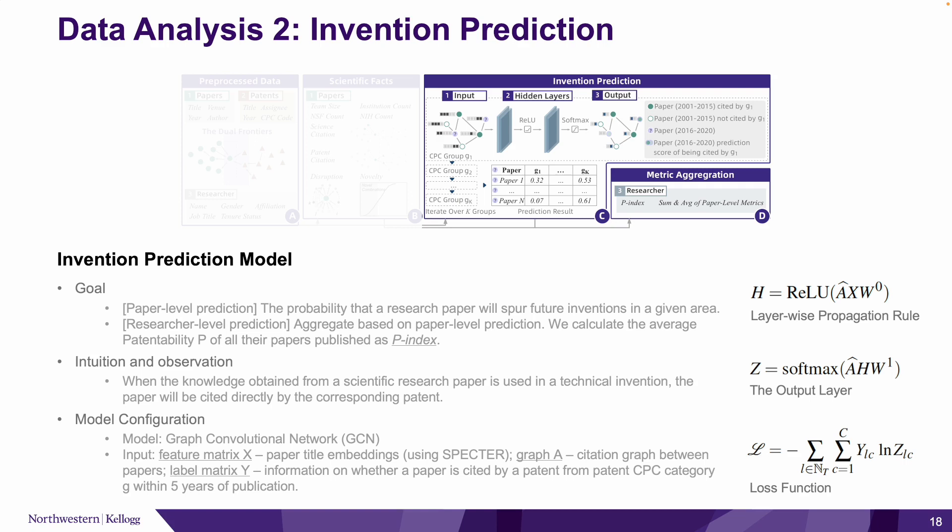Based on paper-level prediction, we are able to calculate the average patentability of all papers a researcher published in the recent five years. This aggregated value is called the P-index. A higher P-index means this researcher's work has higher potential to be used in technology, and these researchers have high potential to be inventors.